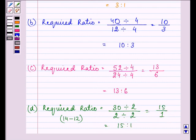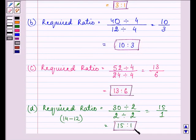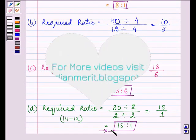So these are the required answers. That is 3 to 1 for the first case, 10 to 3 for the second, 13 to 6, and 15 to 1 for the last and final part. Hope you understood it well. Take care of your calculations and have a good day.